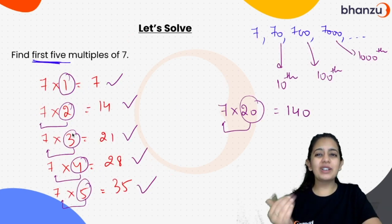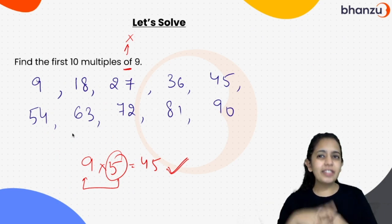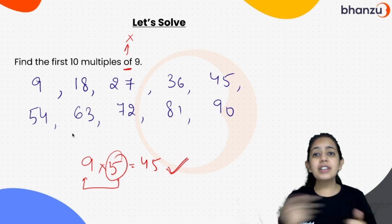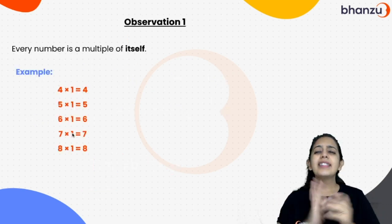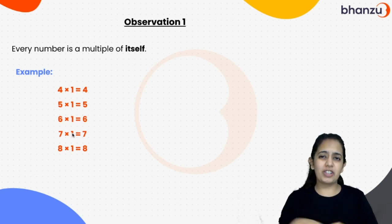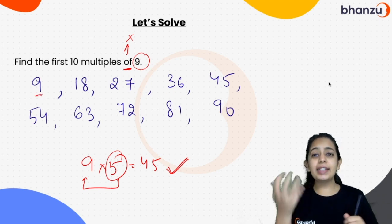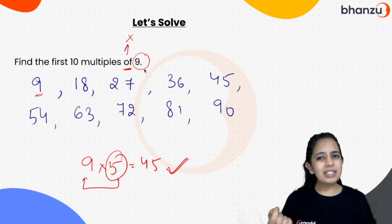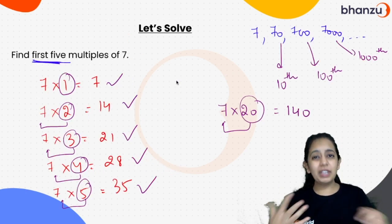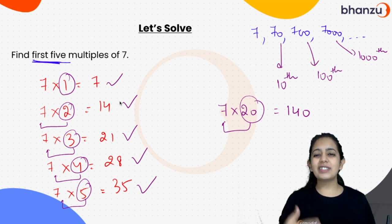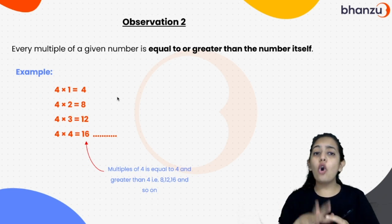We have done two questions so far. What did you observe? Tell me: what is the first multiple of every number? The first multiple of 7 is 7, and the first multiple of 9 is 9. So the first multiple of 10 is 10, and the first multiple of 20 is 20. Therefore, the first multiple of a number is the number itself — every number is a multiple of itself. That's observation number one. Now, are all the other multiples greater than or equal to the number? Yes! 18, 27, 36, 45 — all multiples of 9 are either equal to 9 or greater than 9. Likewise for 7: 7, 14, 21 — all multiples are either equal to 7 or greater than 7. So observation number two is: every multiple of a given number is either equal to or greater than that number.